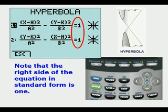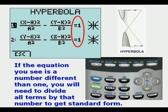The first one is the X squared term minus the Y squared term and the second one is the Y squared term minus the X squared term. Note that the right side of the equation in standard form is 1. If the equation you see is a different number than 1 you will need to divide all terms by that number to get to standard form.